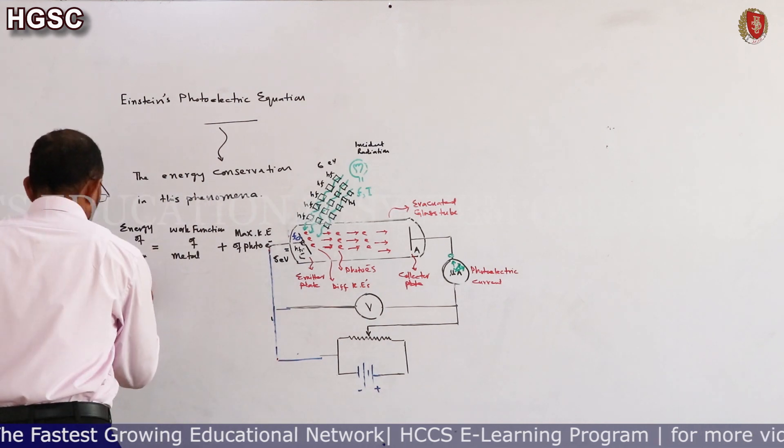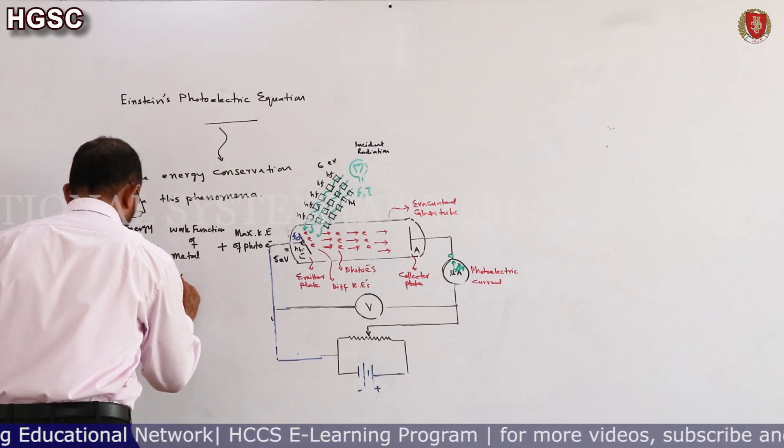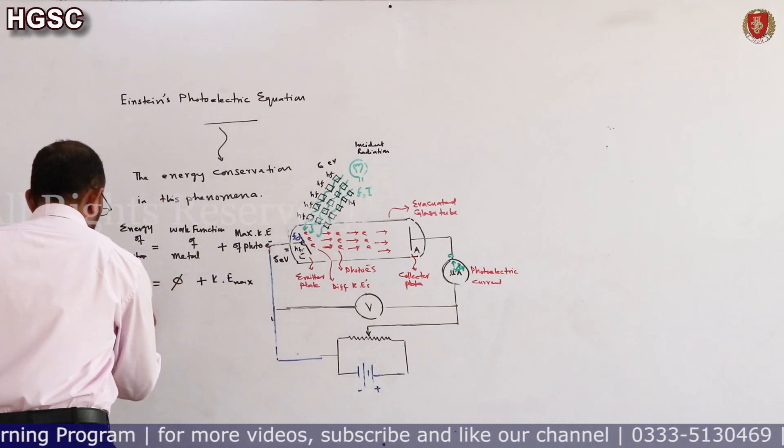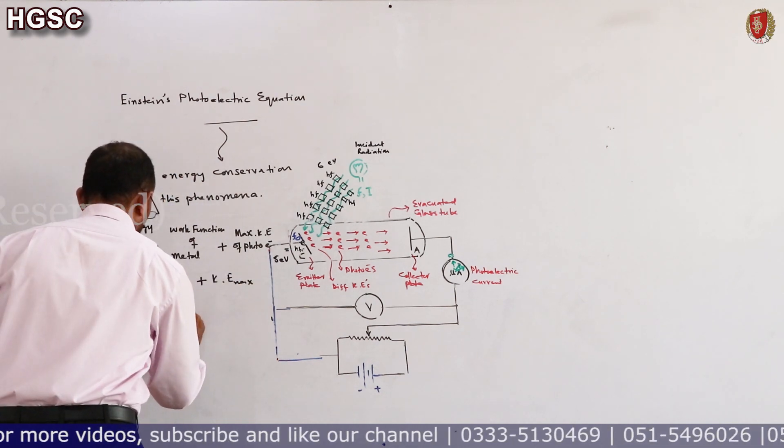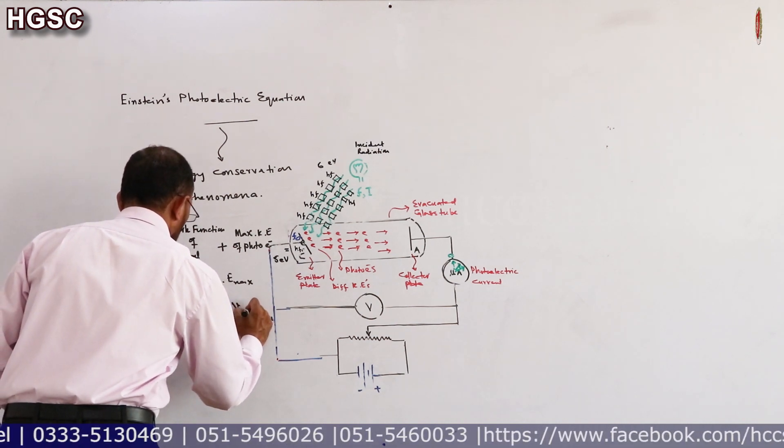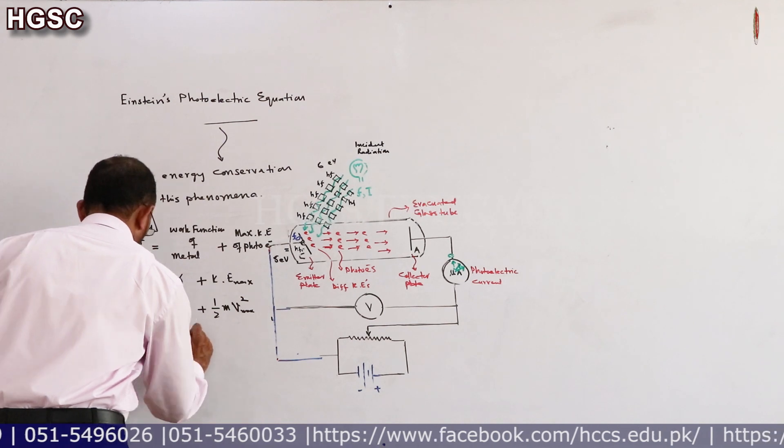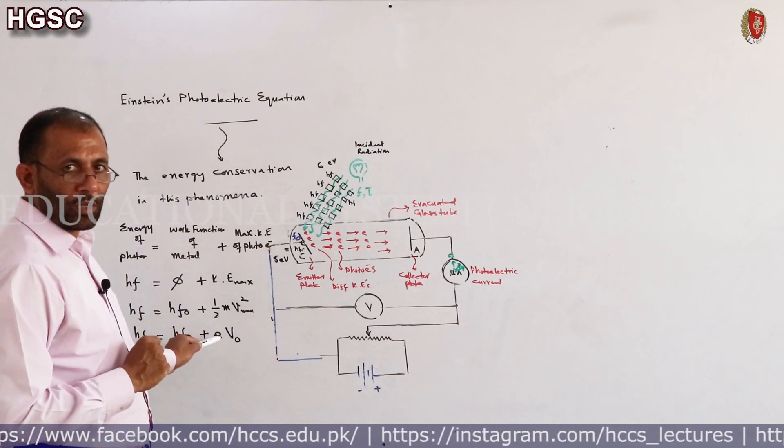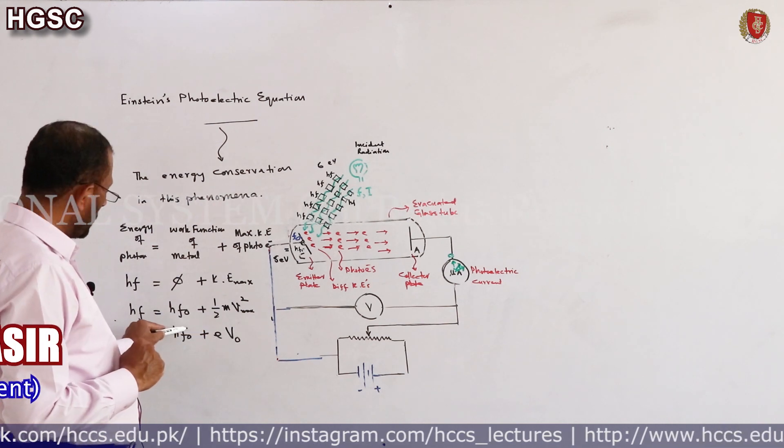Mathematically, hf is energy of photon, phi is work function of metal, and here is the maximum kinetic energy. You can write it as hf equals hf0 plus maximum kinetic energy, half m v max squared. hf equals hf0, and if you want to use eV0, where e is electronic charge and V0 is stopping potential.